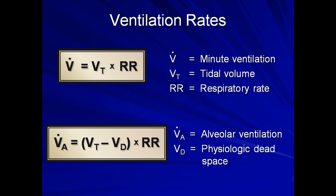For those of you not familiar with the dot notation, whenever you see a dot over top a variable, it alters the meaning of the variable such that it is now a measure of how that variable changes with time. So in other words, a dot over V refers to a rate of volume exchange, or volume per unit time. This notation will be used periodically in subsequent lectures.